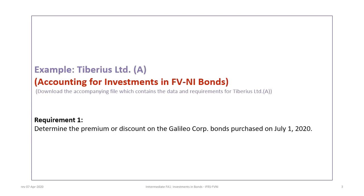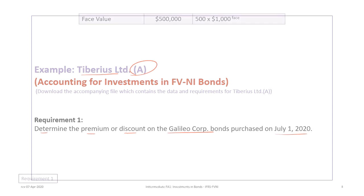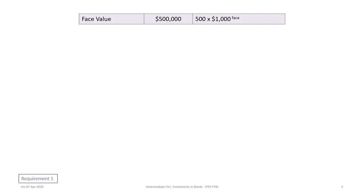This tutorial is based on the Tiberius Limited A problem. There are two requirements for this problem. The first is to determine the premium or discount on the Galileo Corp bonds purchased on July 1, 2020. We will take a step-by-step approach to illustrate how to identify the appropriate information and calculate the present value of the bond and any resulting premium or discount, using a financial calculator.